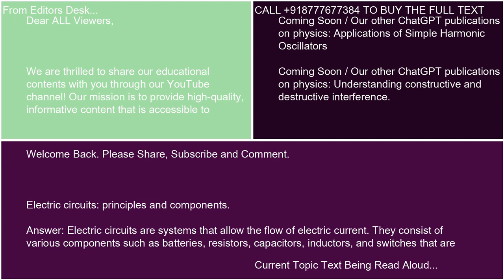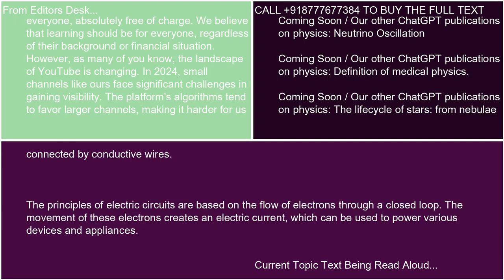Electric circuits are systems that allow the flow of electric current. They consist of various components such as batteries, resistors, capacitors, inductors, and switches that are connected by conductive wires. The principles of electric circuits are based on the flow of electrons through a closed loop. The movement of these electrons creates an electric current, which can be used to power various devices and appliances.